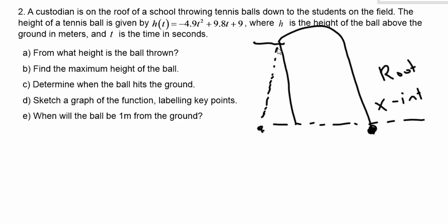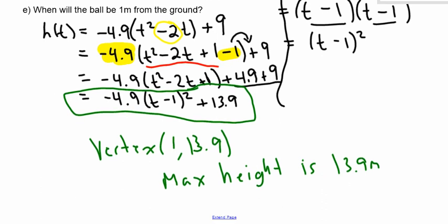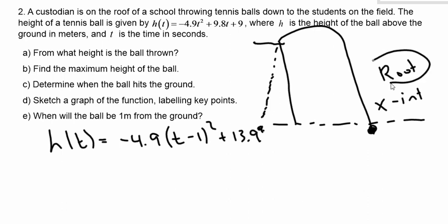So how do I find the roots? We can factor, we could use a quadratic equation, or we could use the equation that I developed up here. So I could use this equation in which I completed the square and solve for the root. The height was negative 4.9 bracket t minus 1 squared plus 13.9. I want to find the roots, which means the x-intercepts, which means I need to let the height equal 0. So I'm going to let the height equal 0 and then solve for t.